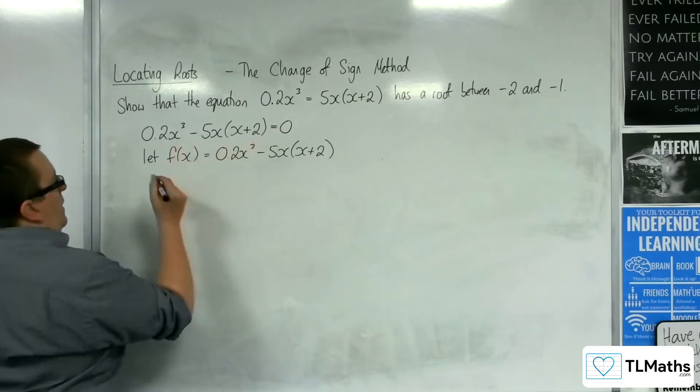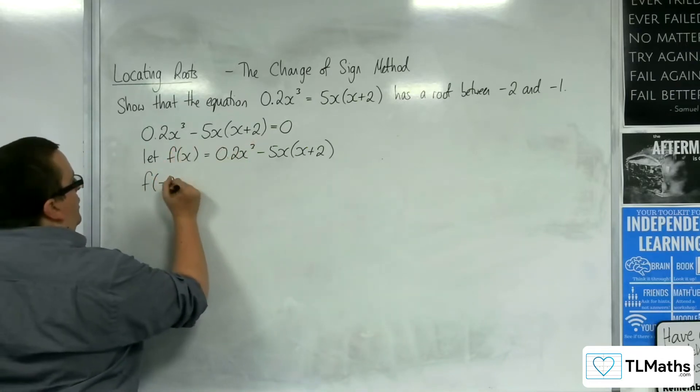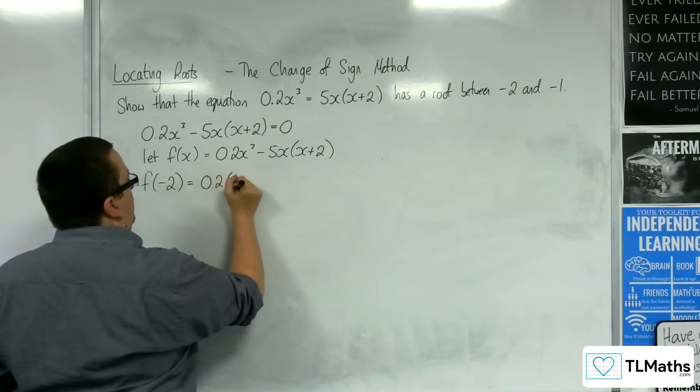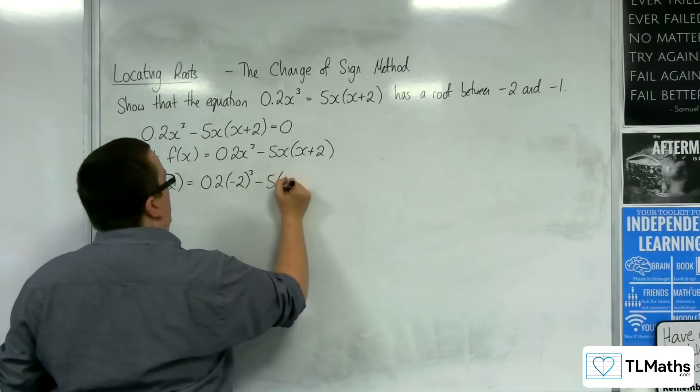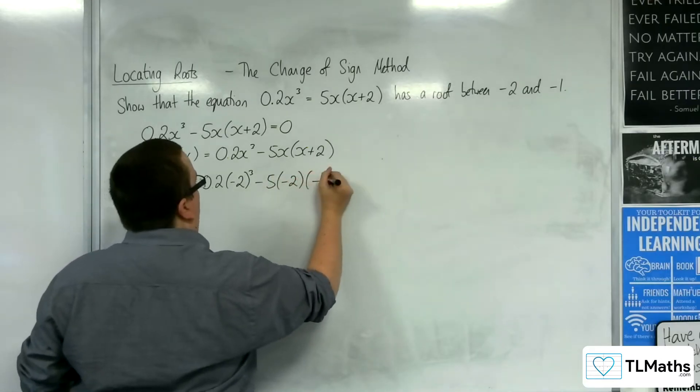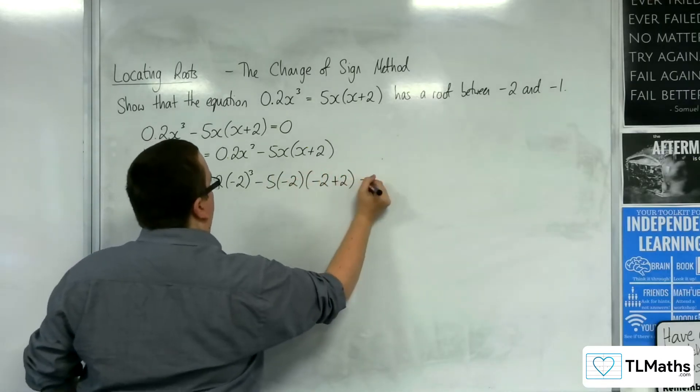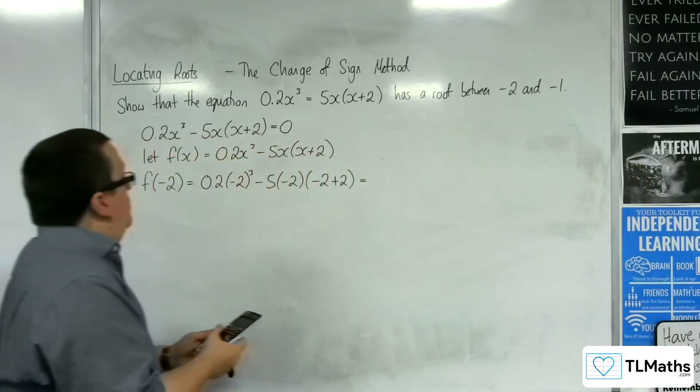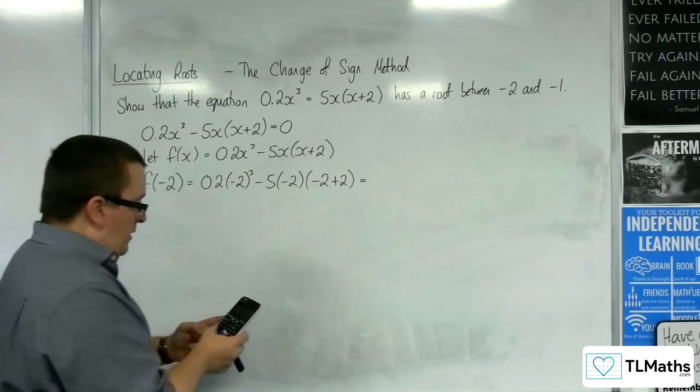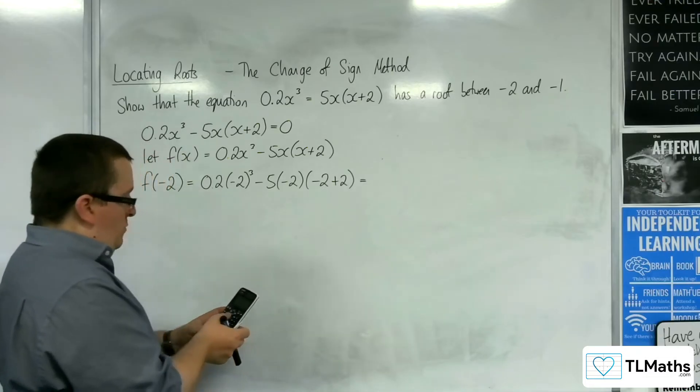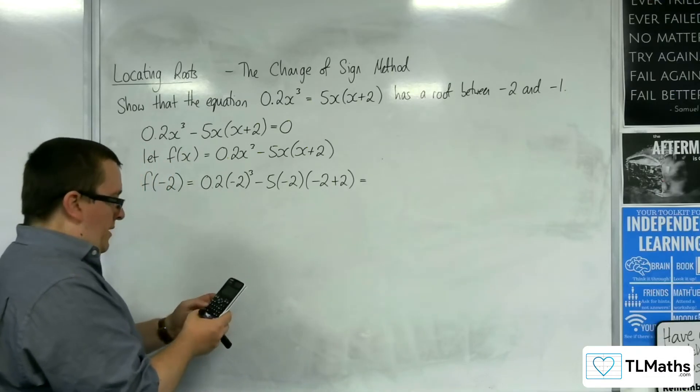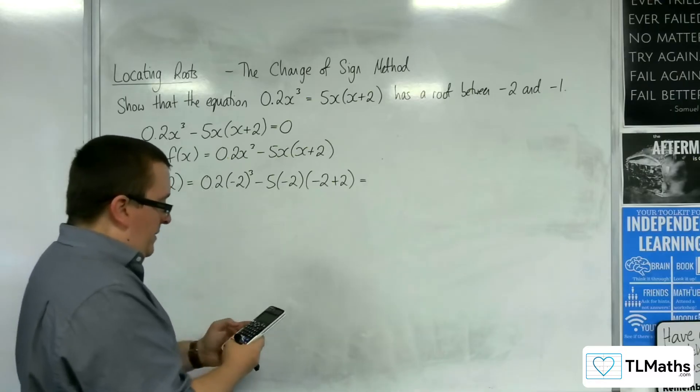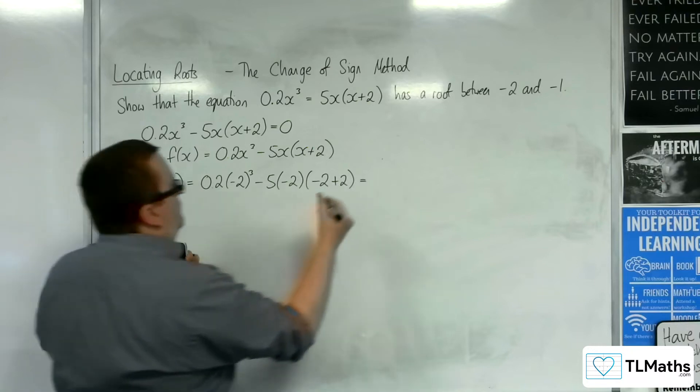Now, if I substitute in -2, I've got 0.2(-2)³ - 5(-2)(-2+2). So 0.2(-2)³ - 5(-2), and then multiplying by -2+2, that last bit is going to be 0. And so we get -8/5.